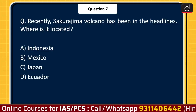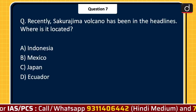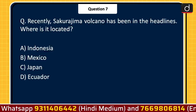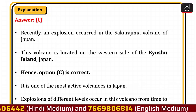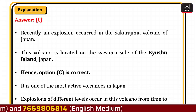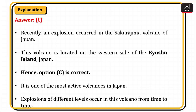Next question: recently, Sakurajima volcano has been in the headlines. Where is it located? Indonesia, Mexico, Japan, or Ecuador? The correct answer is option C, Japan. Recently, an explosion occurred in the Sakurajima volcano of Japan. This volcano is located on the western side of Kyushu island, Japan. Hence, option C is correct. It is one of the most active volcanoes in Japan, with explosions of different levels occurring from time to time.